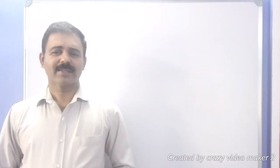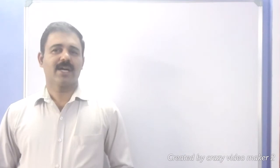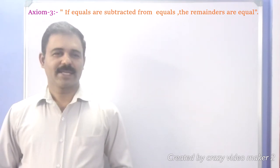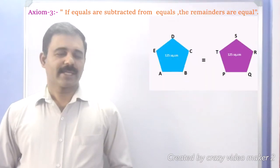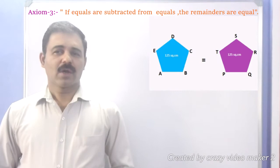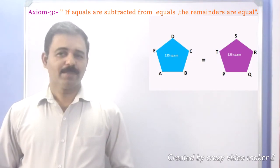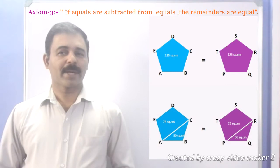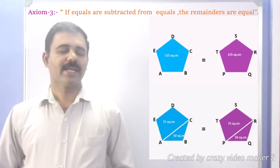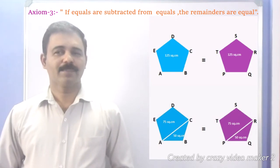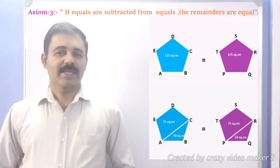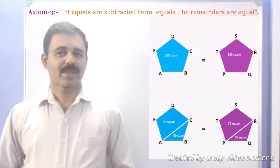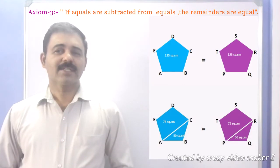Axiom 3 states that if equals are subtracted from equals, the remainders are equal. Suppose you have two pentagons ABCDE and PQRST with equal areas. Remove triangle ABC from ABCDE and remove triangle PQR from pentagon PQRST. If area of triangle ABC equals area of triangle PQR, then area of ACDE equals area of PRST.